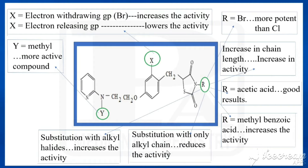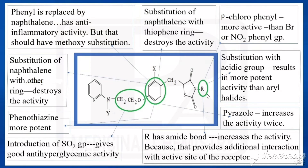Substituting R with only an alkyl chain means the activity would be reduced, but substitution with alkyl halide means the activity would be increased. In the place of R, putting parachlorophenyl gives a more active compound than parabromophenyl or paranitrophenyl. Substituting acetic groups at R gives a more potent compound than aryl halides. If R is having an amide bond, that increases the activity because it provides additional interaction with the active site of the receptor — so this amide linkage is important for activity.